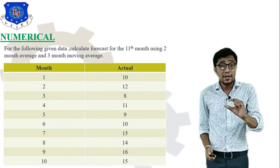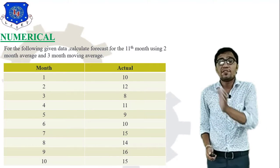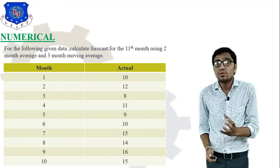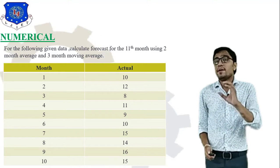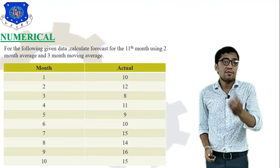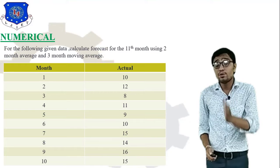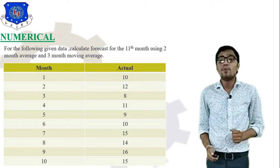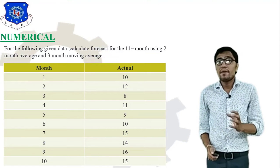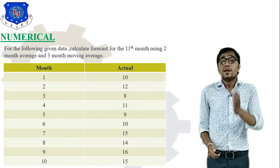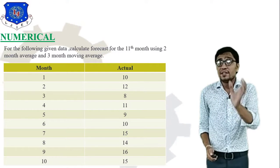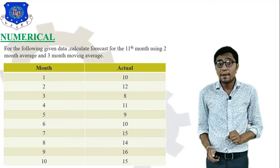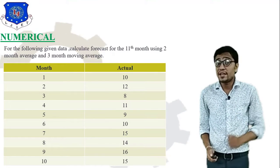In the second month, 12 units are given, and in the 10th month, 15 units are given. You have to find the forecast for the 11th month using two-month moving average and three-month moving average methods.